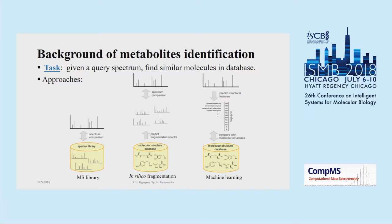In this work, we try to incorporate peak interaction into the learning model to improve the performance. We can understand metabolite identification as a retrieval task in computer science: given a query spectrum, you may want to find biochemically similar molecules in the database. There have been many methods and techniques with different approaches to deal with these tasks. In general, they can be divided into three main approaches.